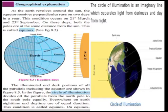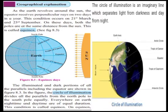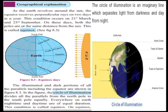The illuminated and dark portions of all the parallels including the equator are shown in figure 8.3. The circle of illumination divides all the parallels from the north pole to the south pole equally, everywhere on earth. Night time and day time are of equal duration. This condition is called equinox.